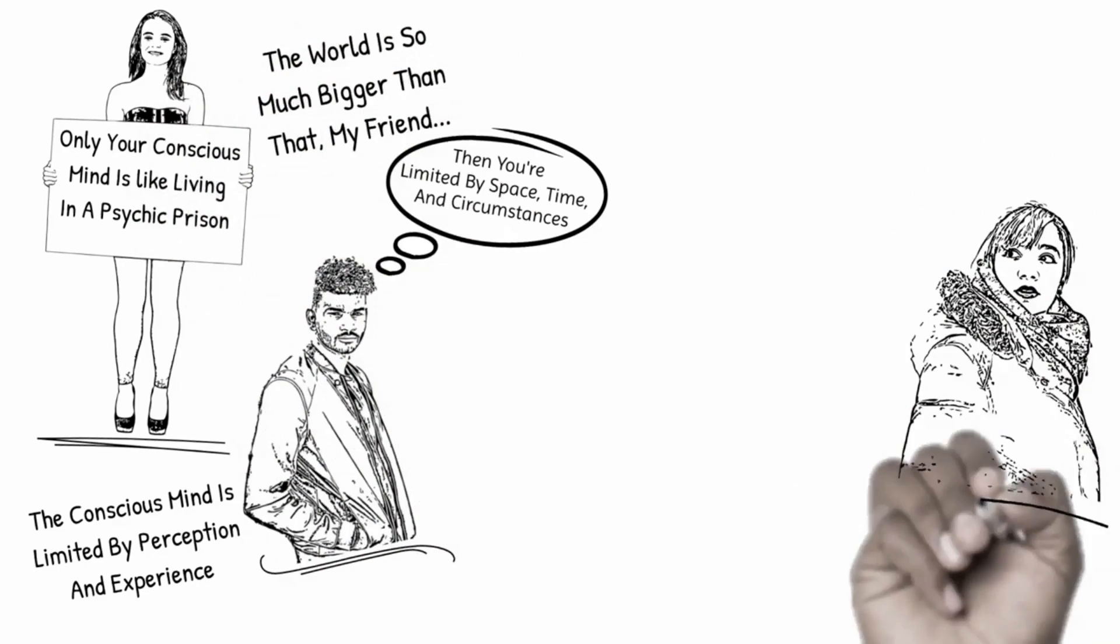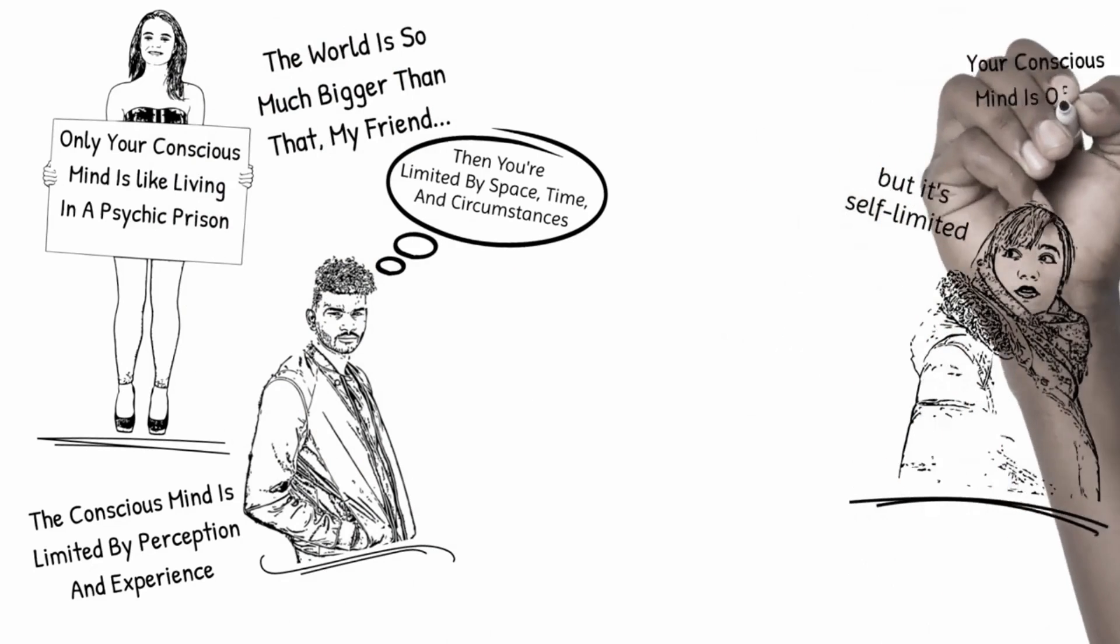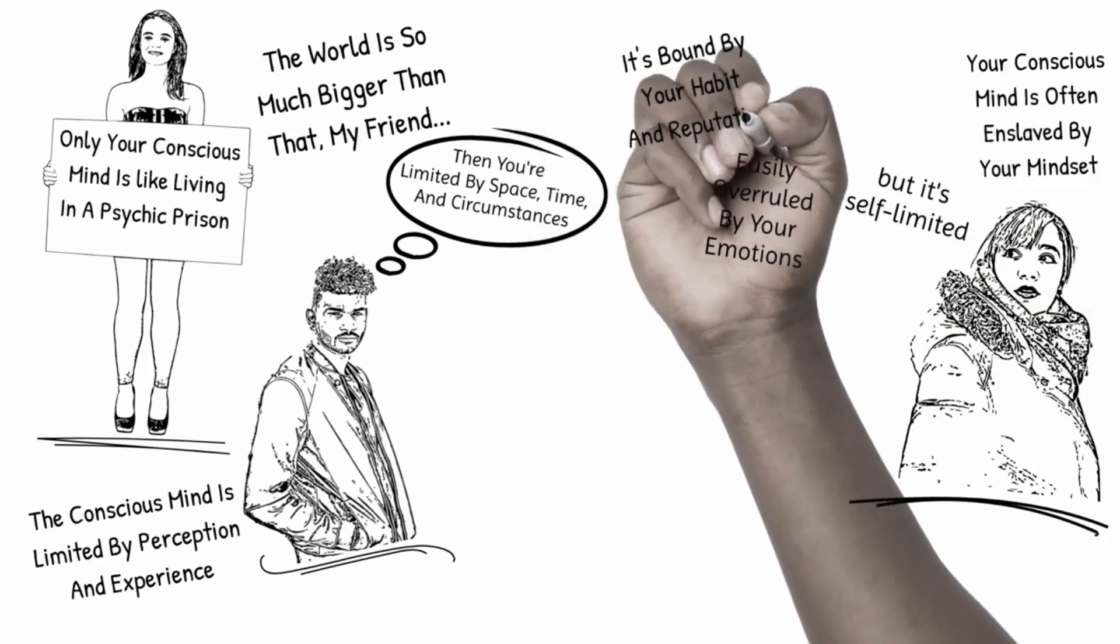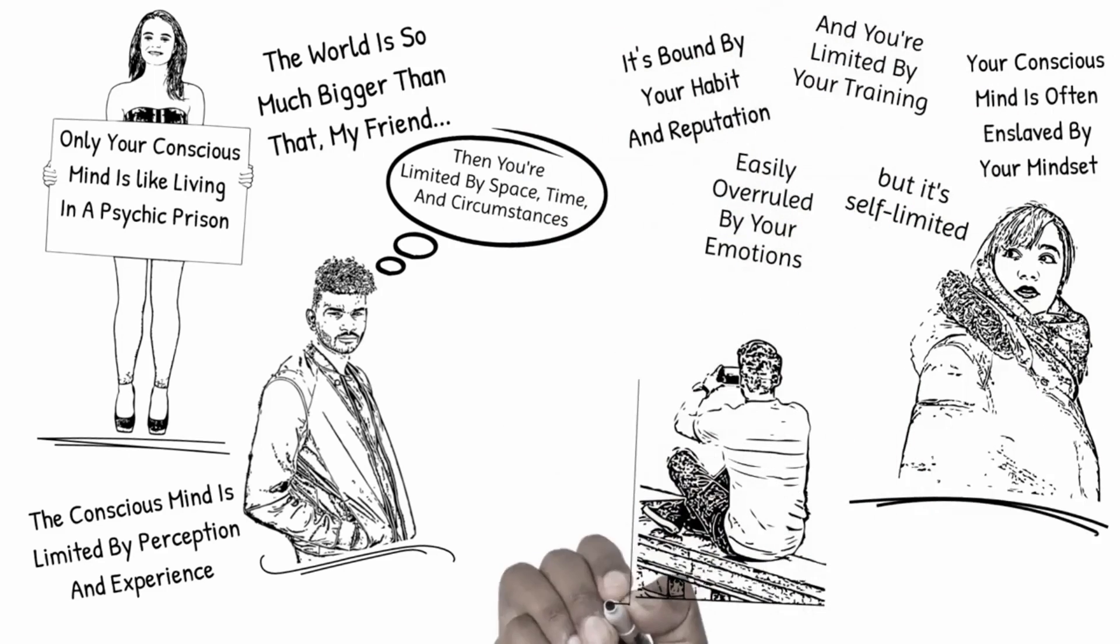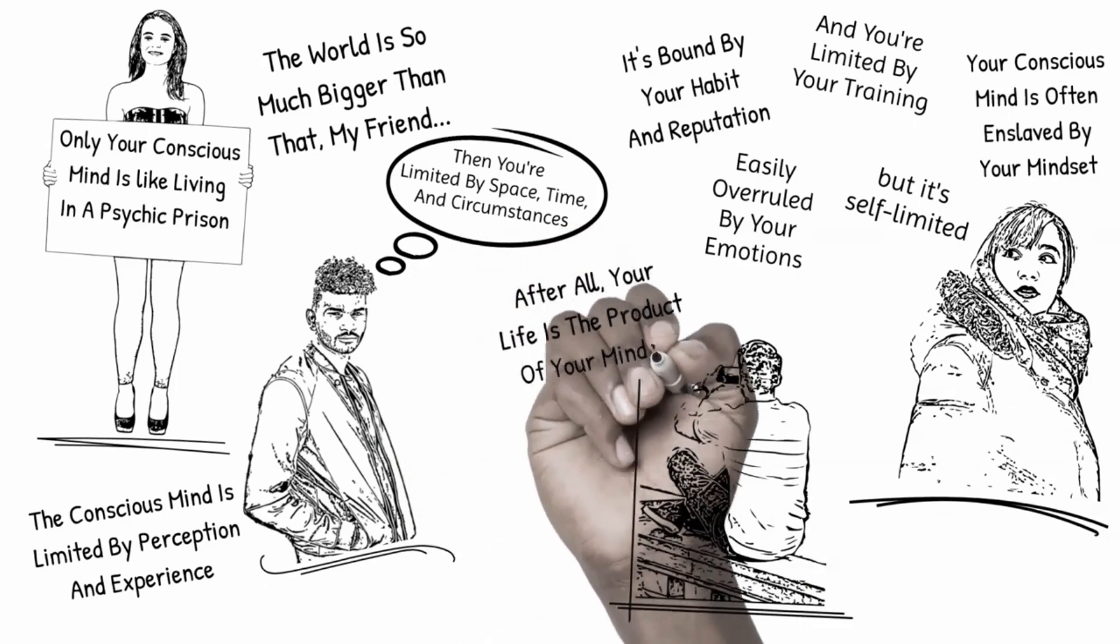All in all, your conscious mind is your most powerful possession, but it's self-limited. Your conscious mind is often enslaved by your mindset, easily overruled by your emotions, it's bound to your habit and reputation, and limited by your training. Different people have different lives as they have different minds. After all, your life is a product of your mindset.